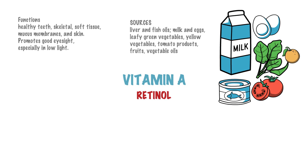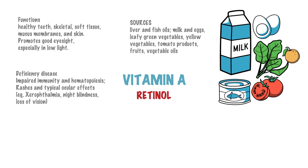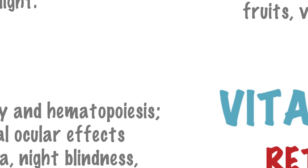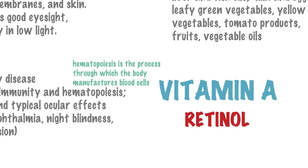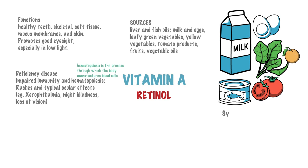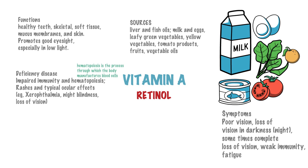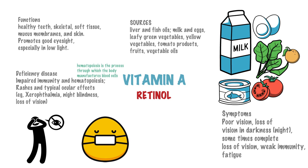A body deficient in Vitamin A may suffer from impaired immunity and hematopoiesis — which is the process through which the body manufactures blood cells. Vitamin A deficiency also causes rashes and typical ocular effects such as xerophthalmia, night blindness and loss of vision. Symptoms include poor vision, loss of vision in darkness, and sometimes complete loss of vision.